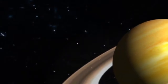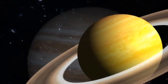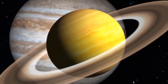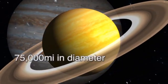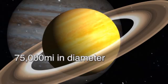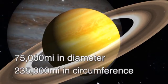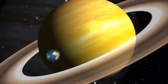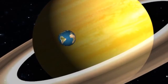Adorned with thousands of beautiful ringlets, Saturn is our solar system's second largest planet next to Jupiter. It's nearly 75,000 miles in diameter and over 235,000 miles in circumference, big enough to hold more than 760 Earths.